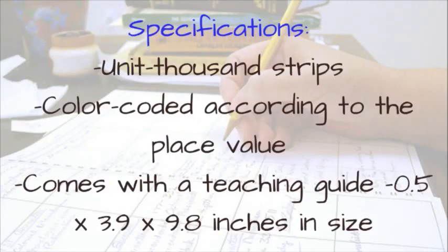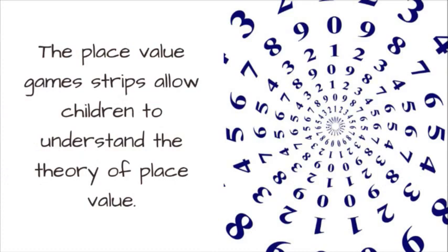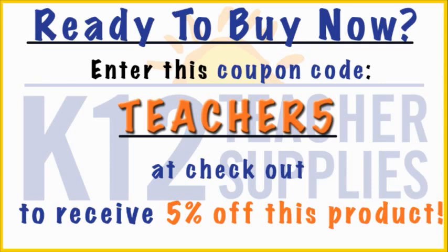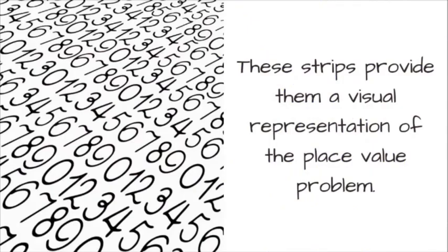Specifications: color-coded according to the place value, comes with a Teaching Guide, and measures 0.5 x 3.9 x 9.8 inches in size. The Place Value Game Strips allow children to understand the theory of place value, providing them a visual representation of place value problems.